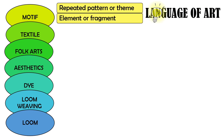Motif in visual art means a repeated pattern or theme. In textile art such as weaving, it is a recurring element or a fragment that when joined together makes a larger work.